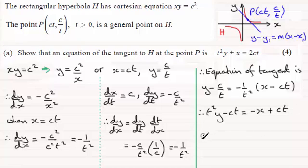So if we just rearrange this now, we can see that we get what we've got to show. t squared y plus x equals 2ct. And there you go.